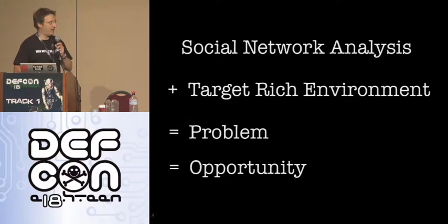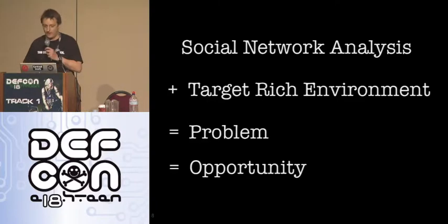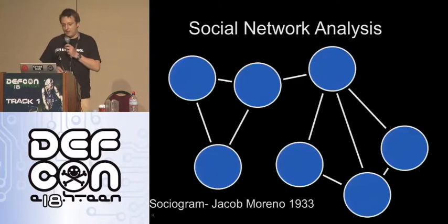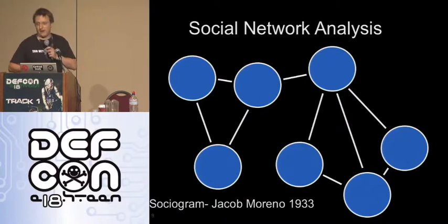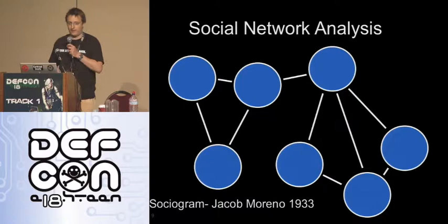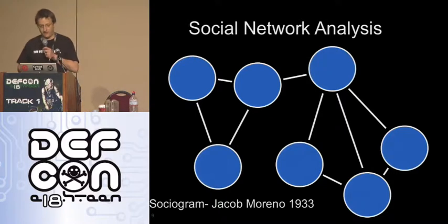Social network analysis — target-rich environment — equals a problem or an opportunity, depending on how you're viewing it. Jacob Moreno is credited with being the grandfather of social network analysis, and that sort of graph first appeared in the New York Times in 1933, around the gestalt psychology movement. You can date this stuff back to the Greeks, but they didn't have the same computing power we've got.